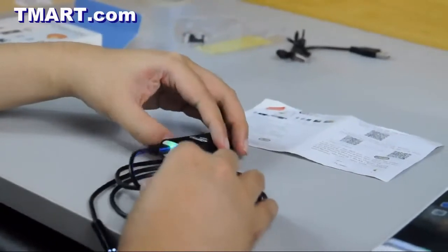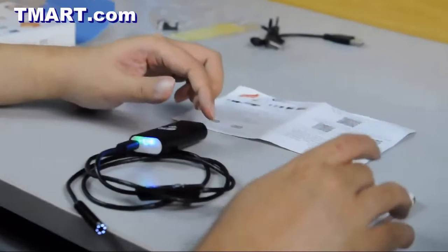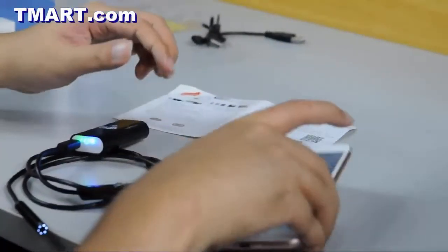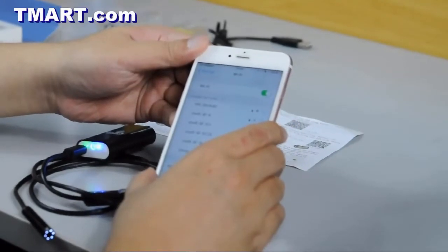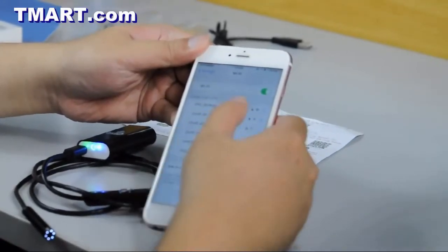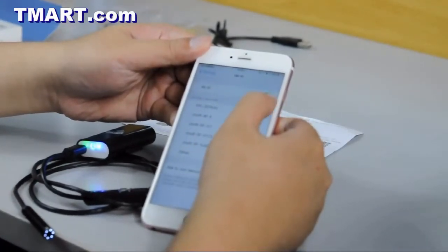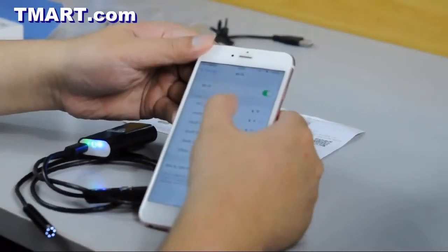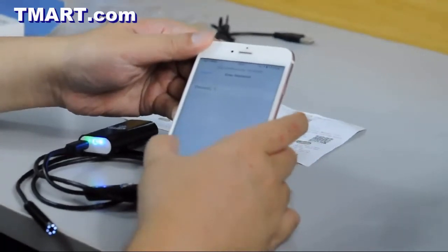Next, you want to connect your phone to the Wi-Fi signal. The SSID you want to look for begins with YPC. The password is 12345678.